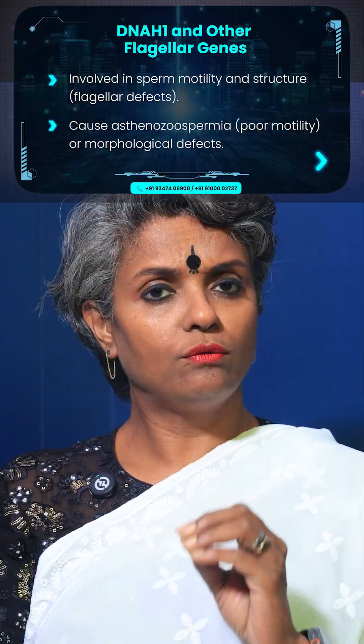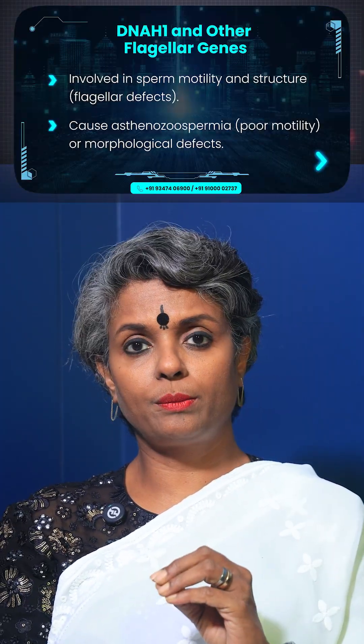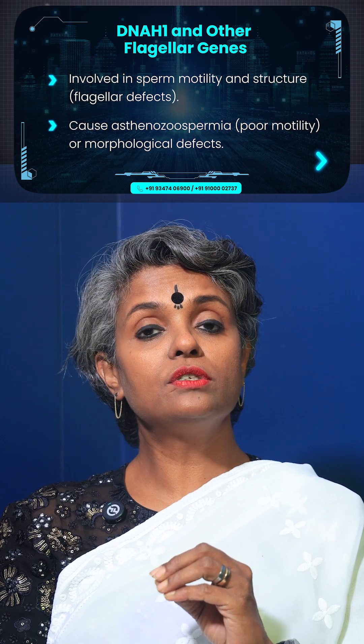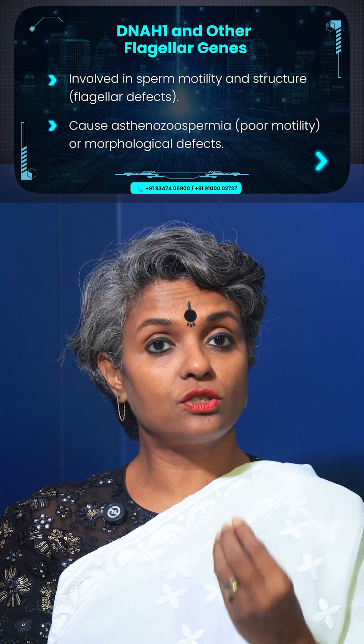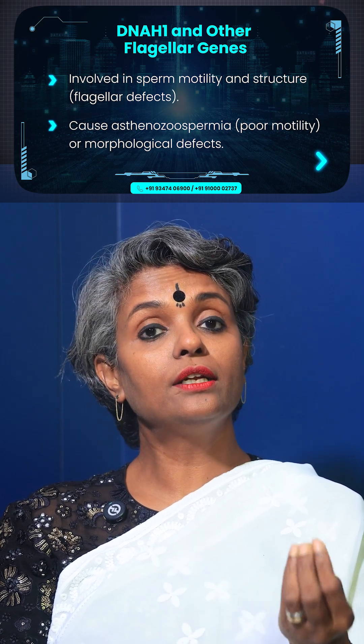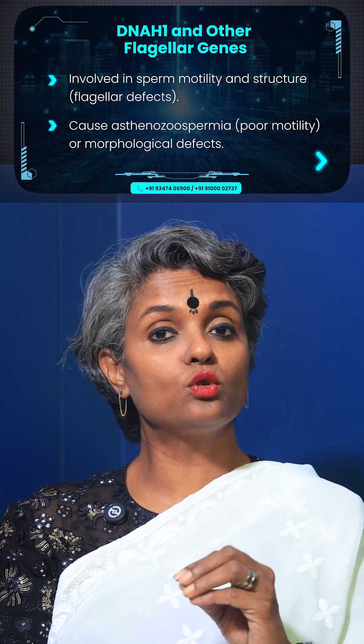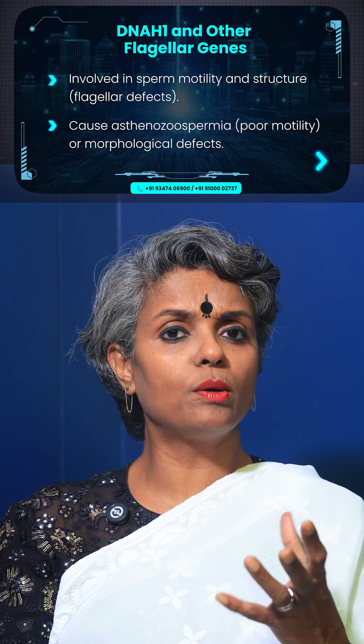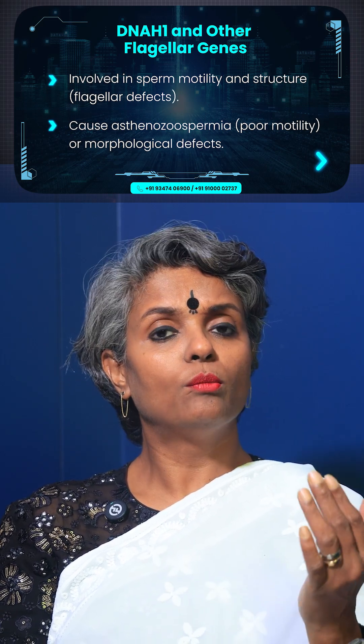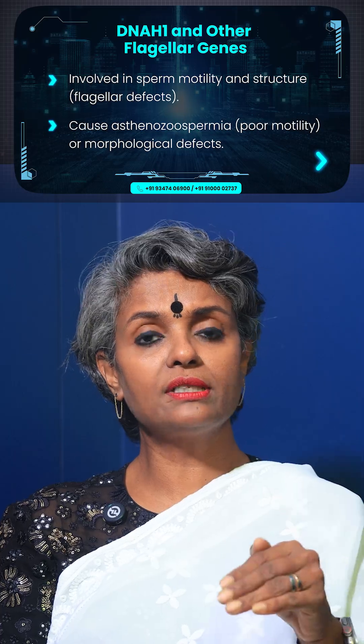DNAH1 and other flagellar genes are also involved in azoospermia. They are involved in sperm motility and structure and can cause asthenospermia, poor sperm motility, or morphological defects if these genes are mutated.